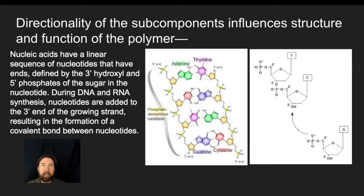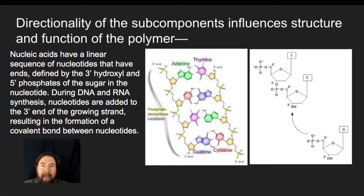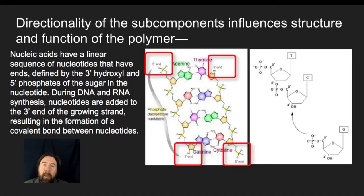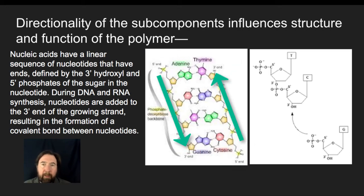Directionality of subcomponents is also a major issue, especially when it comes to the function of a polymer. This is most notable when we talk about DNA and RNA. One of the big things about nucleic acids is that they have directionality. As you can see here, we have a 5' to 3' direction, and DNA is always built in the 5' to 3' direction.